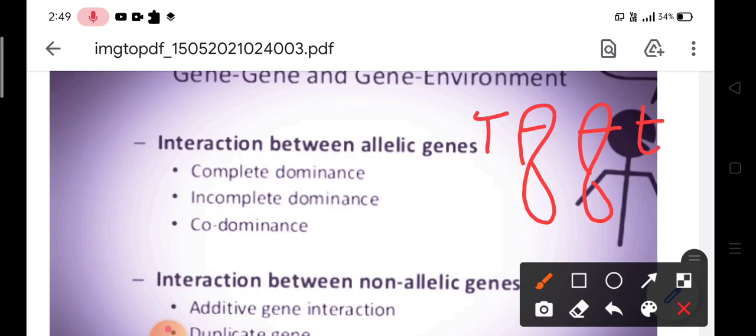These are two alleles, T and t. Both control the plant height. Now this type of interaction is allelic gene interaction. Both these alleles control the same character, that is plant height, and are present on the same or homologous chromosome.